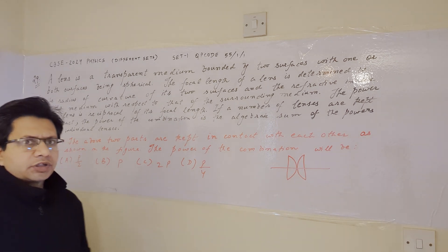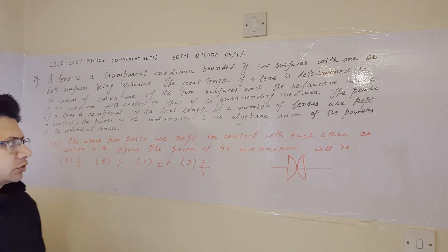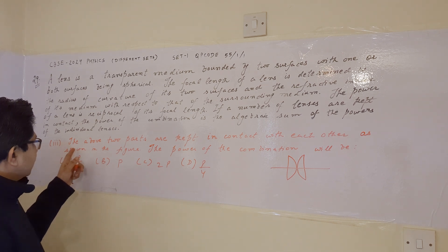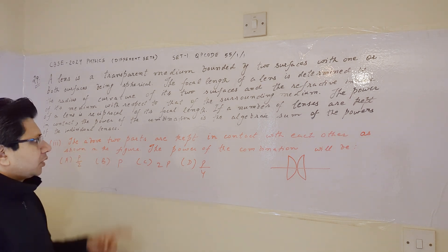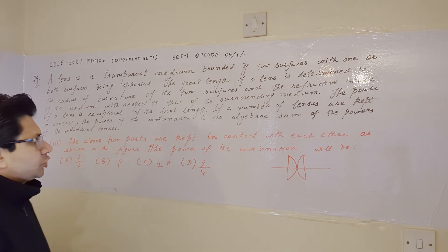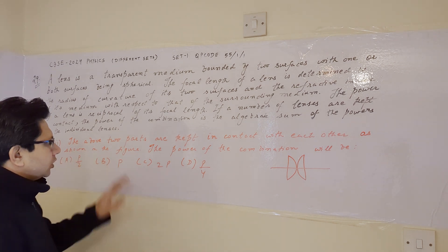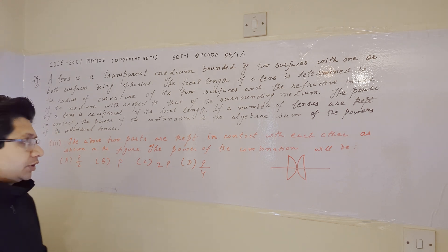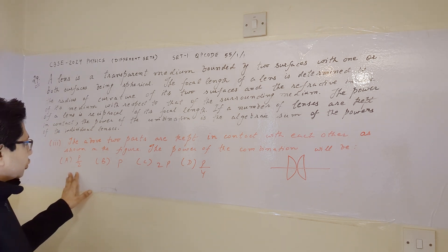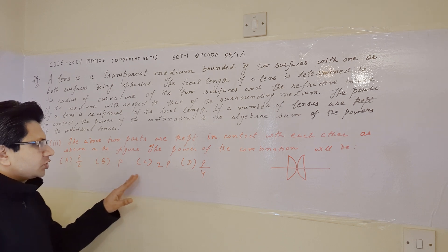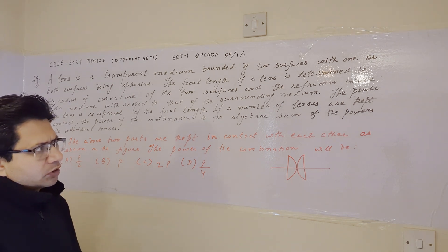This next question is in continuation with the previous problem. In this question, the above two parts are kept in contact with each other as shown in the figure. The power of the combination will be — option A: P/2, option B: P, option C: 2P, and option D: P/4.